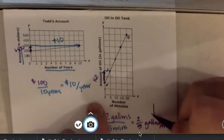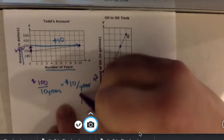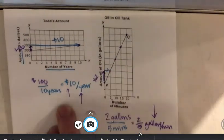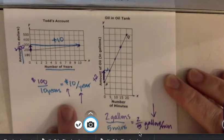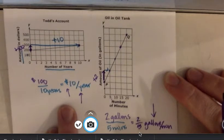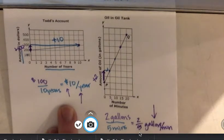But this context here, and this context here of the years, dollars per year, and gallons per minute, is the interpretation of the slope that we need to be able to be comfortable with, and aware of when we're looking at slopes and understanding what that slope means.